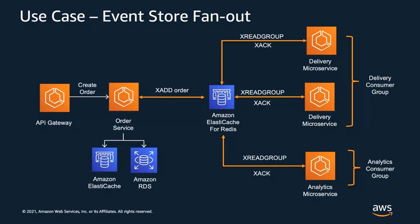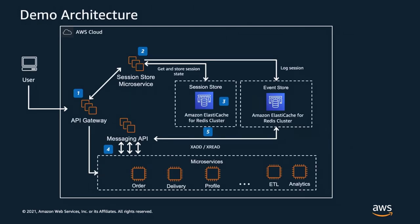Now let's go into a demo. We have an API gateway talking to a session store microservice using Amazon ElastiCache for Redis as an underlying data store for session information with low-latency in-memory access. We also have an API gateway creating orders or profiles, with those services emitting events into Amazon ElastiCache for Redis as both an event store and a cache.